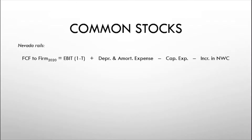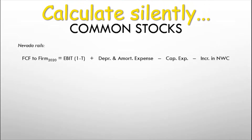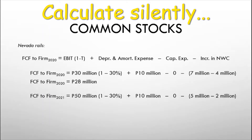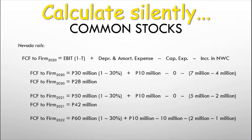To arrive at the value of one share, we calculate the free cash flows to the firm for each of the next three years. The free cash flows to the firm for 2020 equal 28 million pesos. For 2021, free cash flows to the firm equal 42 million pesos. For 2022, free cash flows to the firm equal 41 million pesos.